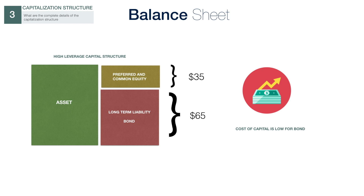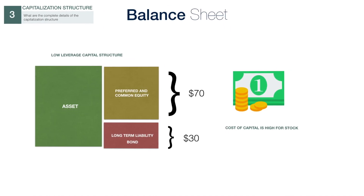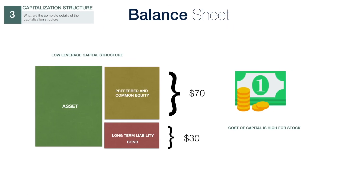For example, if a company has $100 in assets and $35 of them from equity and $65 from bond, then this is considered to be a high-leverage capital structure. Low-leverage Capital Structure. If the same company allocates the capital by $70 stock and $30 bond, then this is considered a low-leverage capital structure.